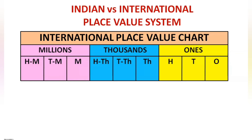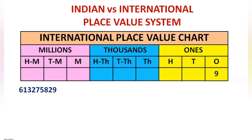Note that there is no lakhs period in the international system. Coming to our number 613,275,829, let us arrange these digits in each place value from the right. Writing this number with commas as 613,275,829 — that means placing a comma after every three digits from the right side.